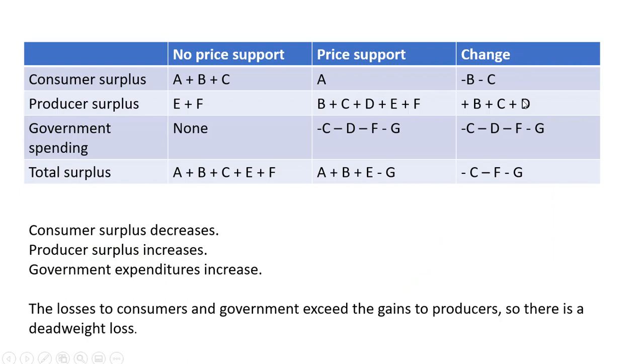So if we look at the change then, we see that consumers are worse off. Consumer surplus shrinks. We see that this program helps producers, helps farmers. Producer surplus increases.